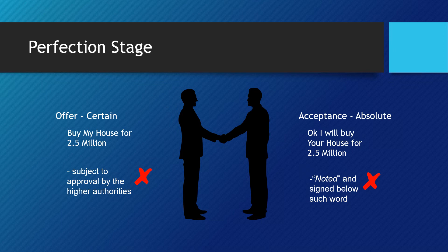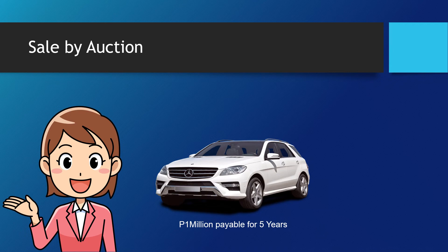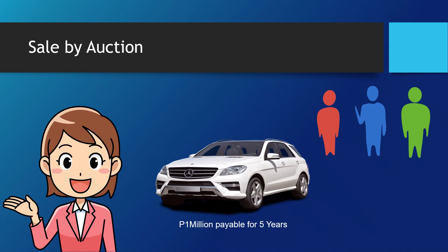In a sale by auction, the owner's terms and conditions for the sale of property under auction are binding on all bidders whether or not they knew of them. An auction sale is perfected by the fall of the hammer or in other customary manner.